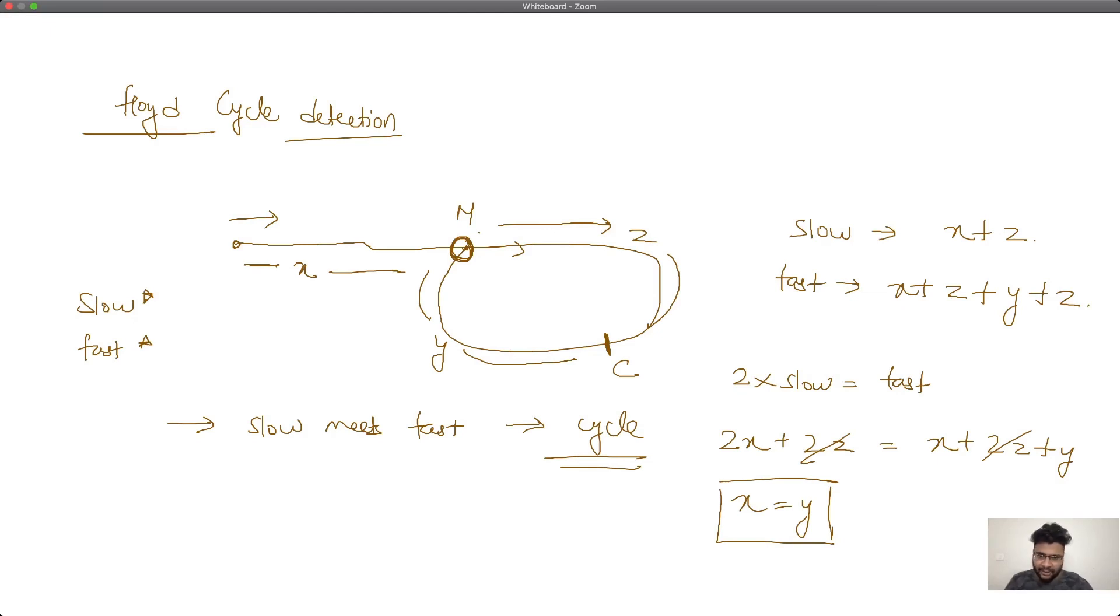In order to find the start of the loop, we just need to start another pointer from this point. We'll move the slow pointer from this end, and when both of them collide, that point will be the meeting point, the start of the cycle. This is the logic and algorithm deduced by Floyd.